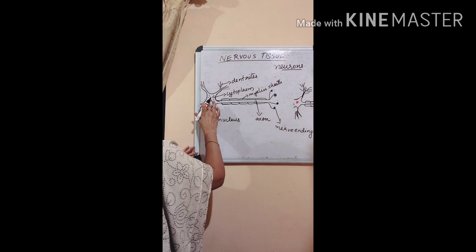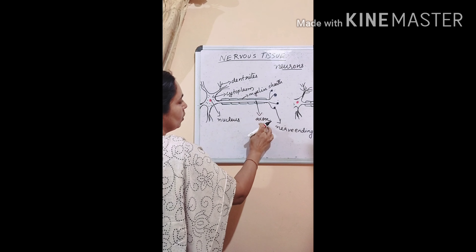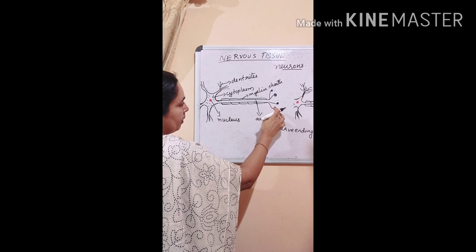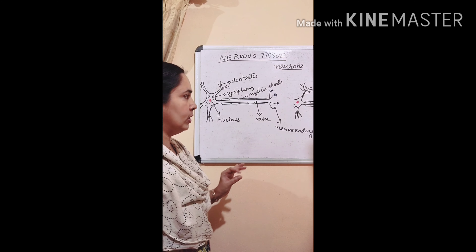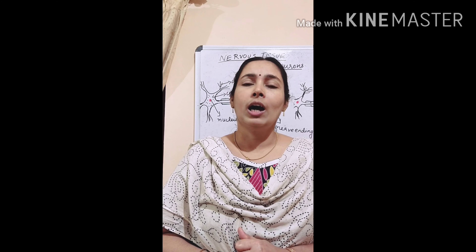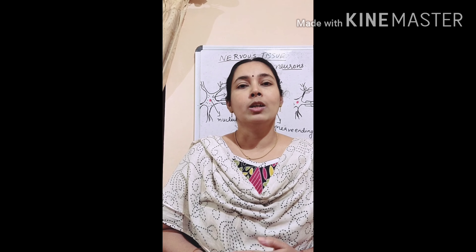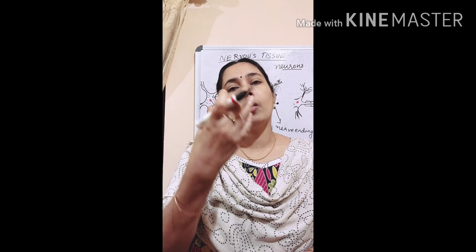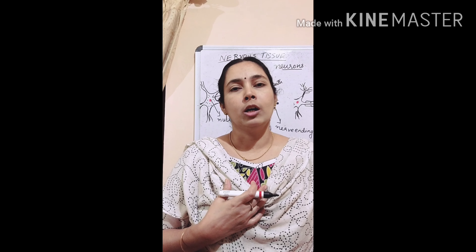So a neuron has a cell body with nucleus and cytoplasm, small branches called dendrites, and a long branch called axon. The axon is covered by the myelin sheath, and at the tip there are again small branches whose tips are called nerve endings. The function of the neuron is to carry messages — from our brain or spinal cord to our muscles, or from our sense organs back to our brain or spinal cord.